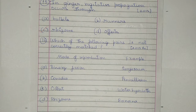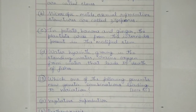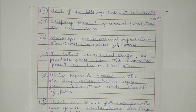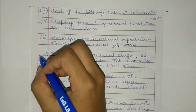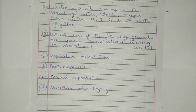Question 16. Which of the following pairs is not correctly matched? Binary fission – Sargassum, conidia – Penicillium, offset – water hyacinth, or rhizome – rhizome. The answer is a. Question 17. Which of the following statements is incorrect? a) Offspring produced by asexual reproduction are called clones, b) microscopic motile asexual reproductive structures are called zoospores, c) in potato, banana, and ginger, the plantlets arise from the internodes present in the modified stem. The wrong statement is c.